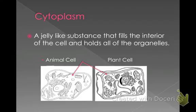One more organelle — cytoplasm. We already talked about cytoplasm when we talked about protists, but again it's all that empty space that fills the cells. It's a jelly-like substance that fills the inside of the cell and holds all the organelles.